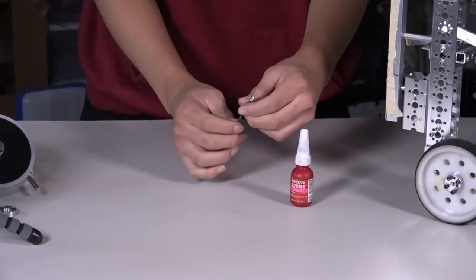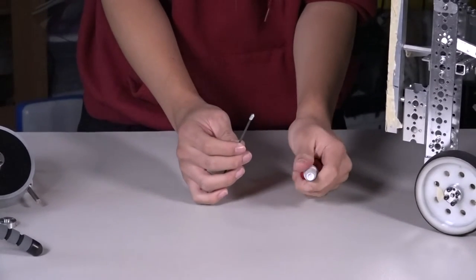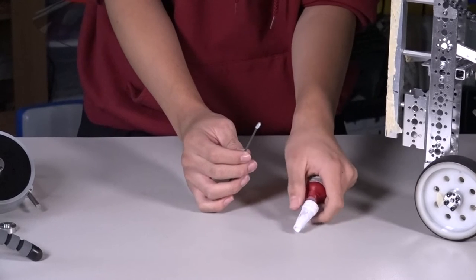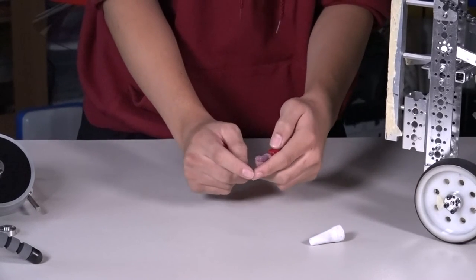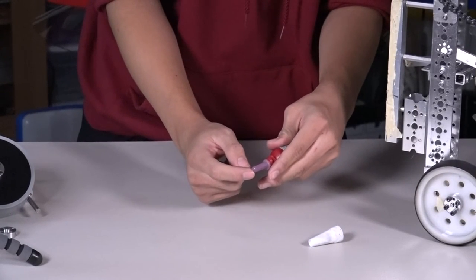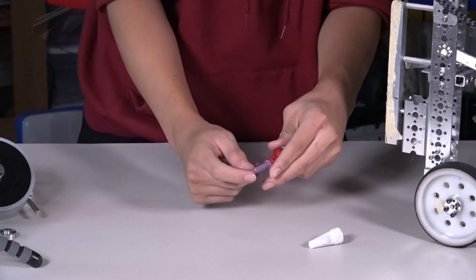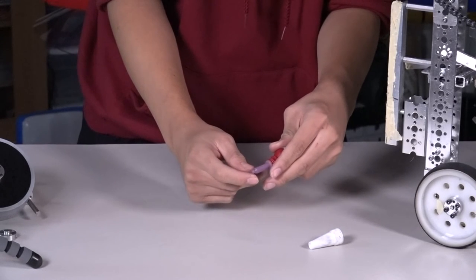You put it on a standard hex key and you apply a dab of the Loctite onto the set screw and you make sure it's spread evenly across the set screw.